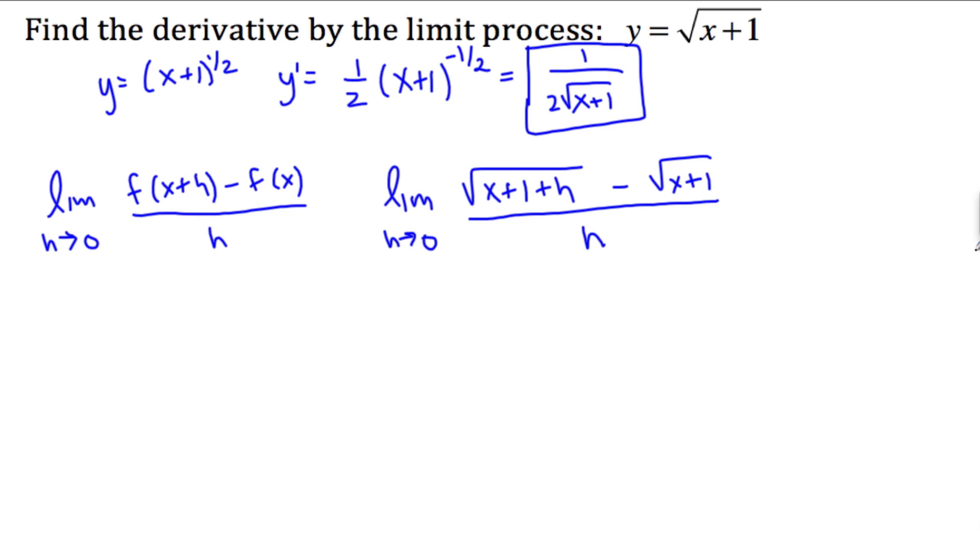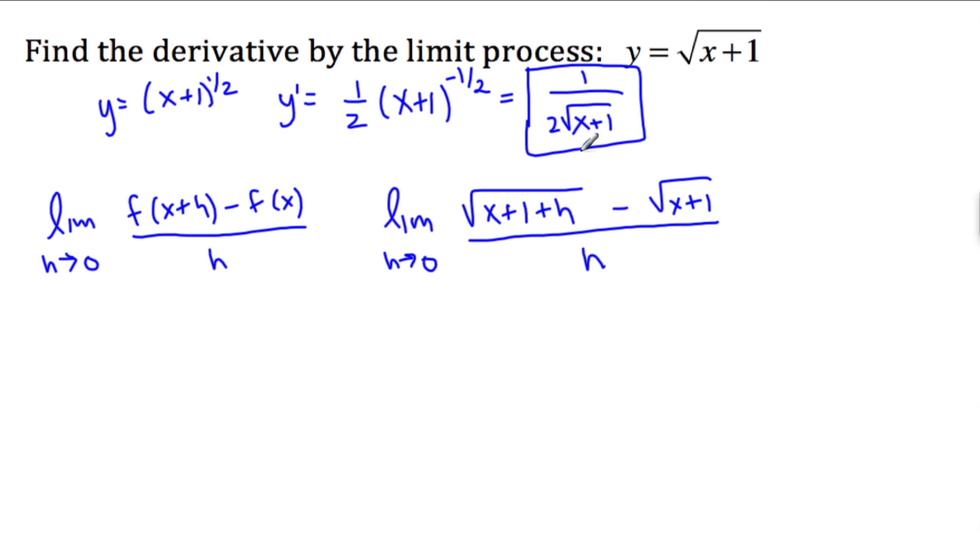Alright, remember that this is our goal here. To get to this point now, what we'd like to do is just plug in 0 right now for h, but we can't because we can never divide by 0. So always our goal is to get rid of the h right here. Make sure that we can plug in 0 and not divide by 0.